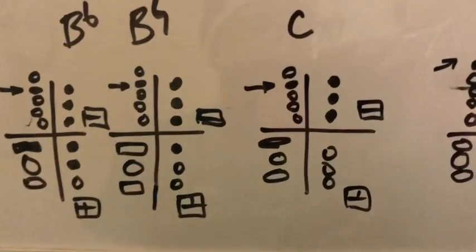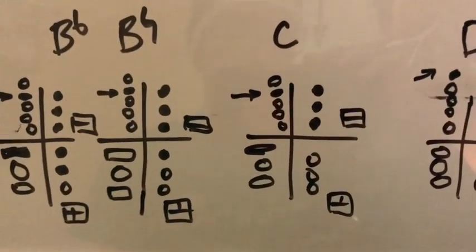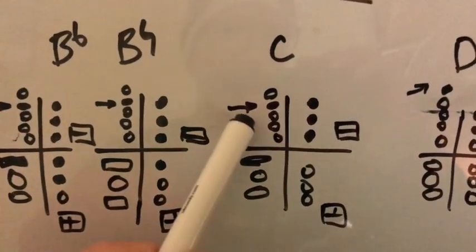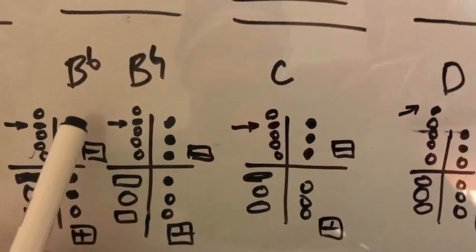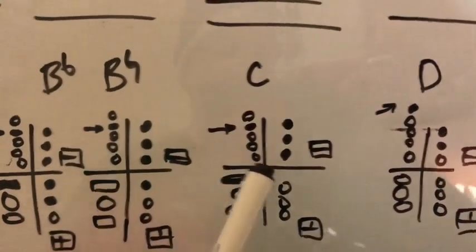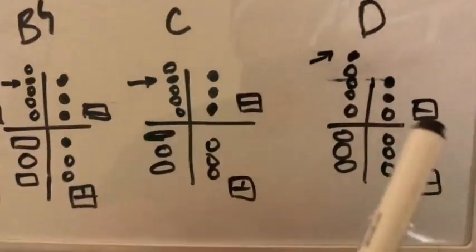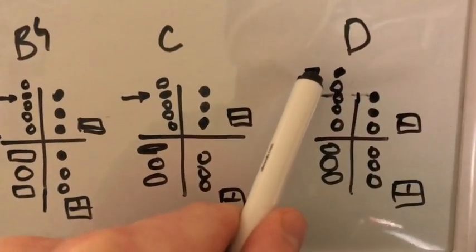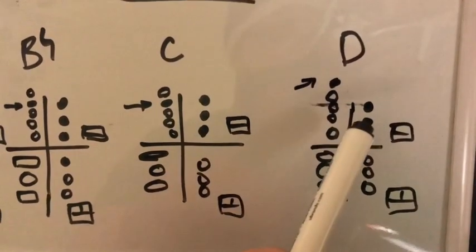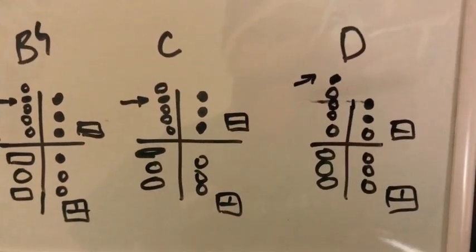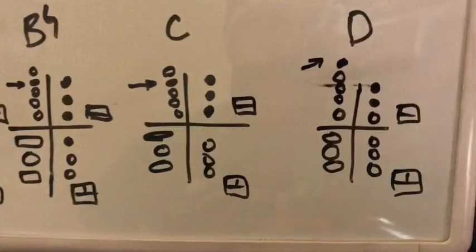C is the same fingering as low C, one, two, three in the left hand, and the same flick key as low B or as B flat and B natural. D is where it changes and you have the very, very, very top flick key, but the same fingering in the left hand for regular space or on the regular line D.